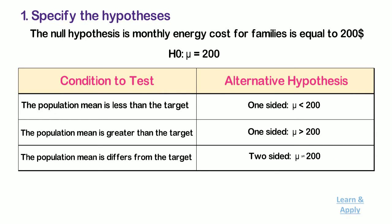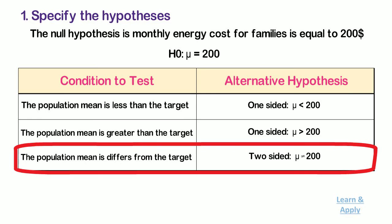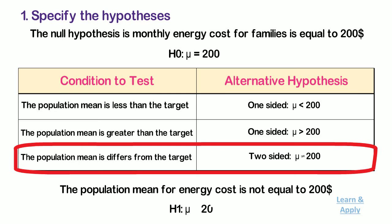Because they need to ensure that the monthly energy cost for families has changed from the previous year, the economist selects the two-sided alternative hypothesis. This tests that the population mean for energy cost is not equal to 200. Formally, this is written as H1: μ ≠ 200.